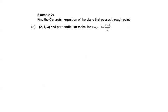In this example, we are going to find the Cartesian equation of the plane that passes through point (2, 1, -3) and perpendicular to the line x = y - 1 = (z + 1)/3.